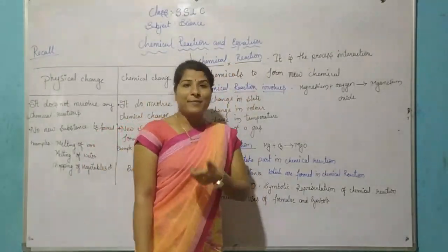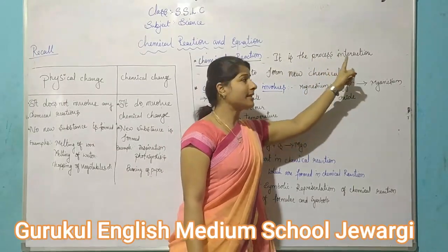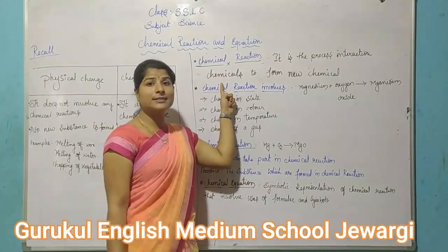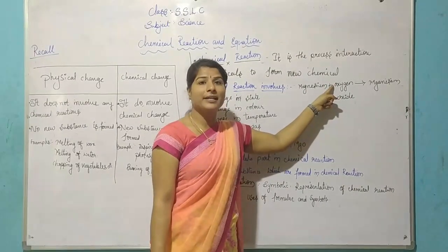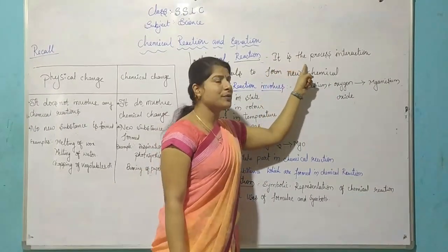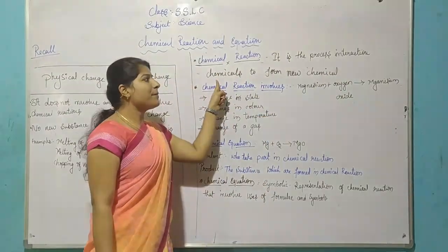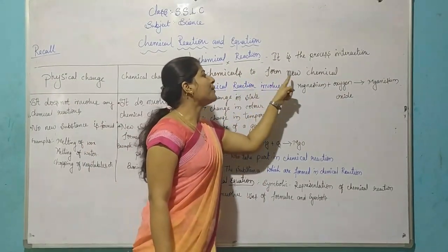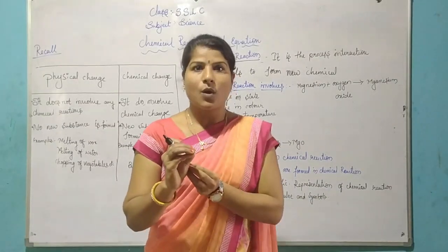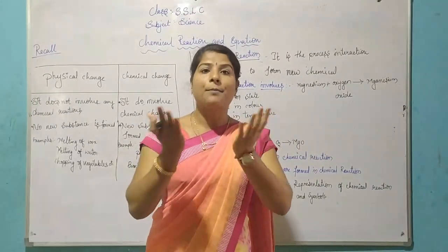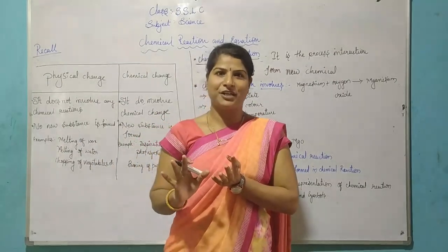What is meant by chemical reaction? Chemical reaction is the process of interaction of chemicals to form a new chemical. In other words, one or two substances combine to form new substances. That is the chemical reaction.